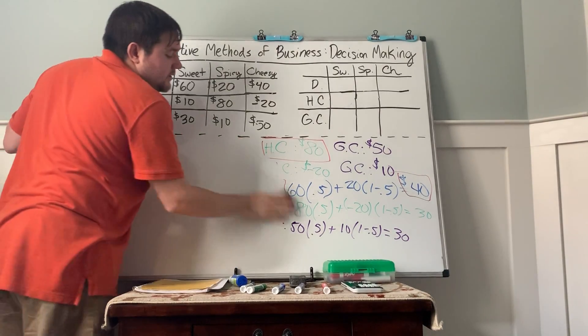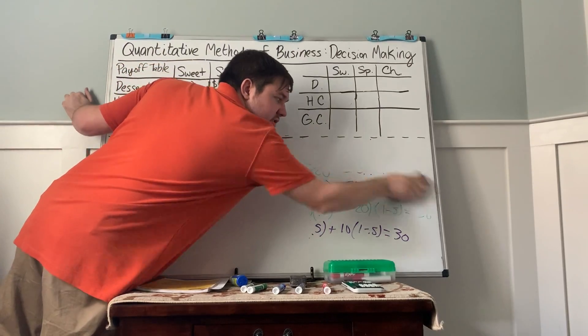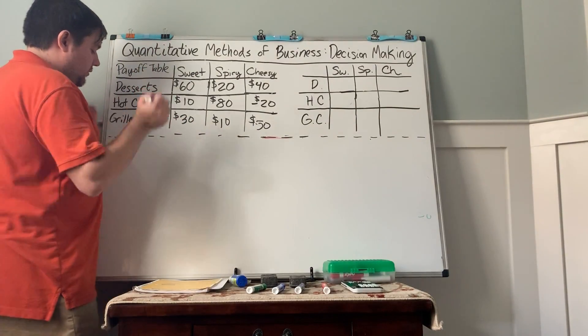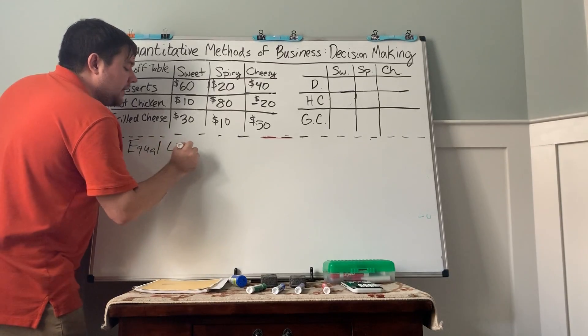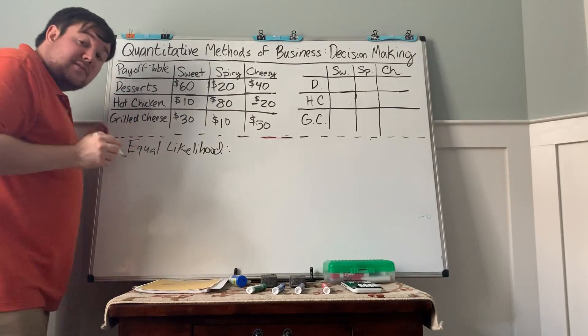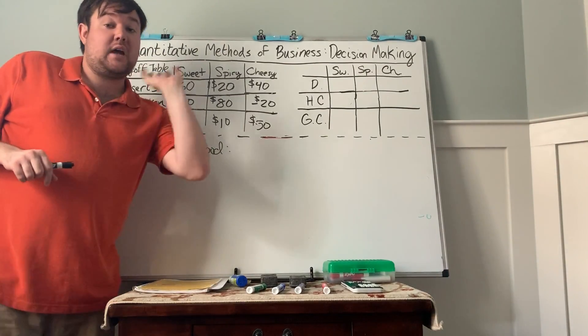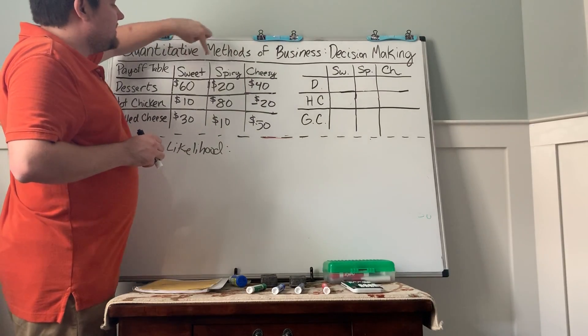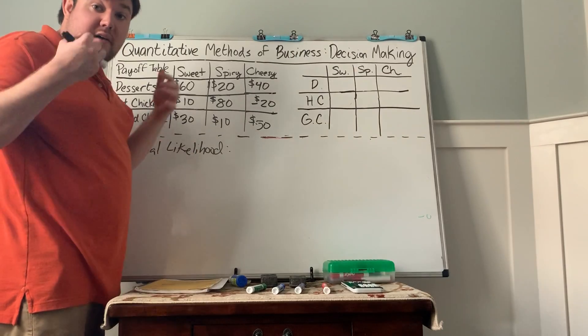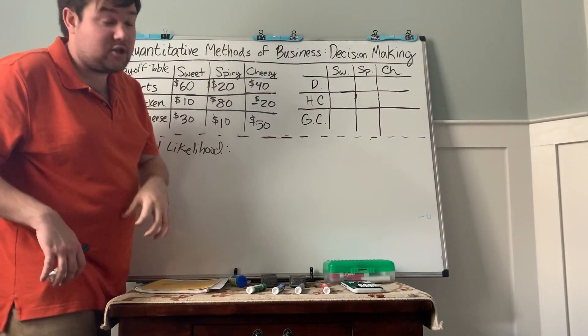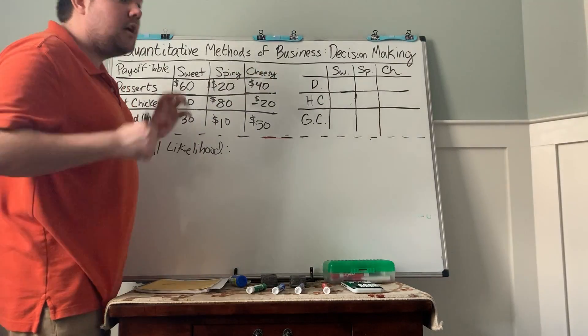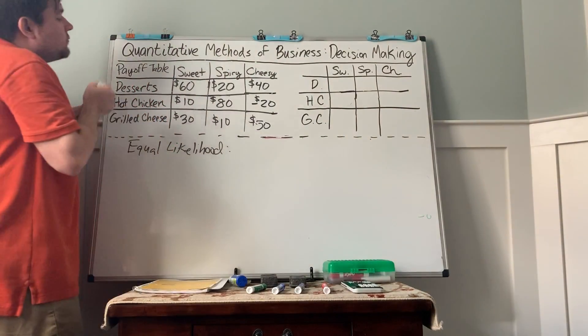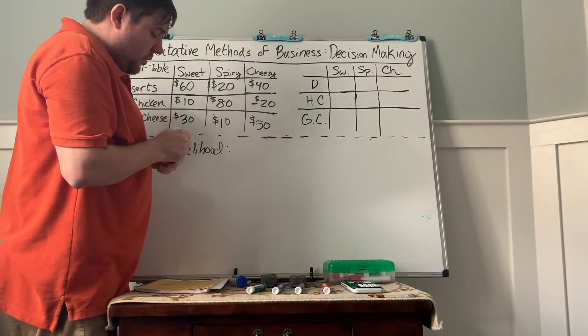The next one is called the equal likelihood criteria. It's very similar. It basically is the concept of expected value that you covered in the last chapter. Basically, what we do is we say each state of nature has an equal likelihood of happening. So since there are three states of nature, each has a probability of one-third of happening.